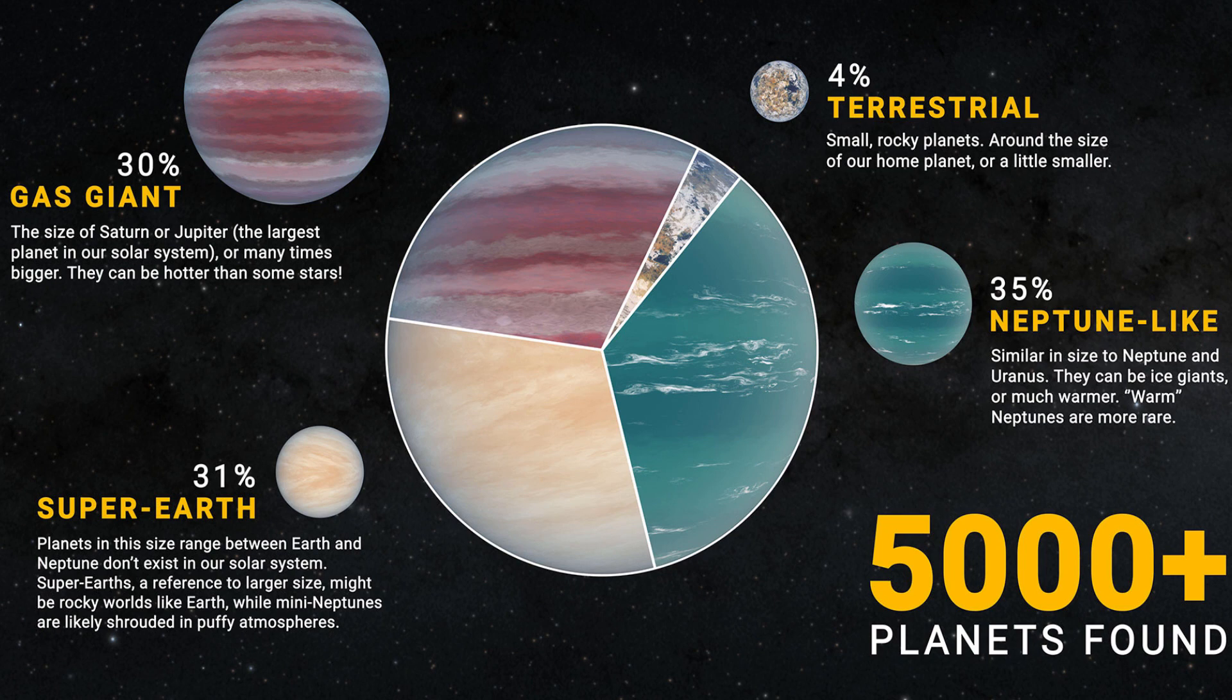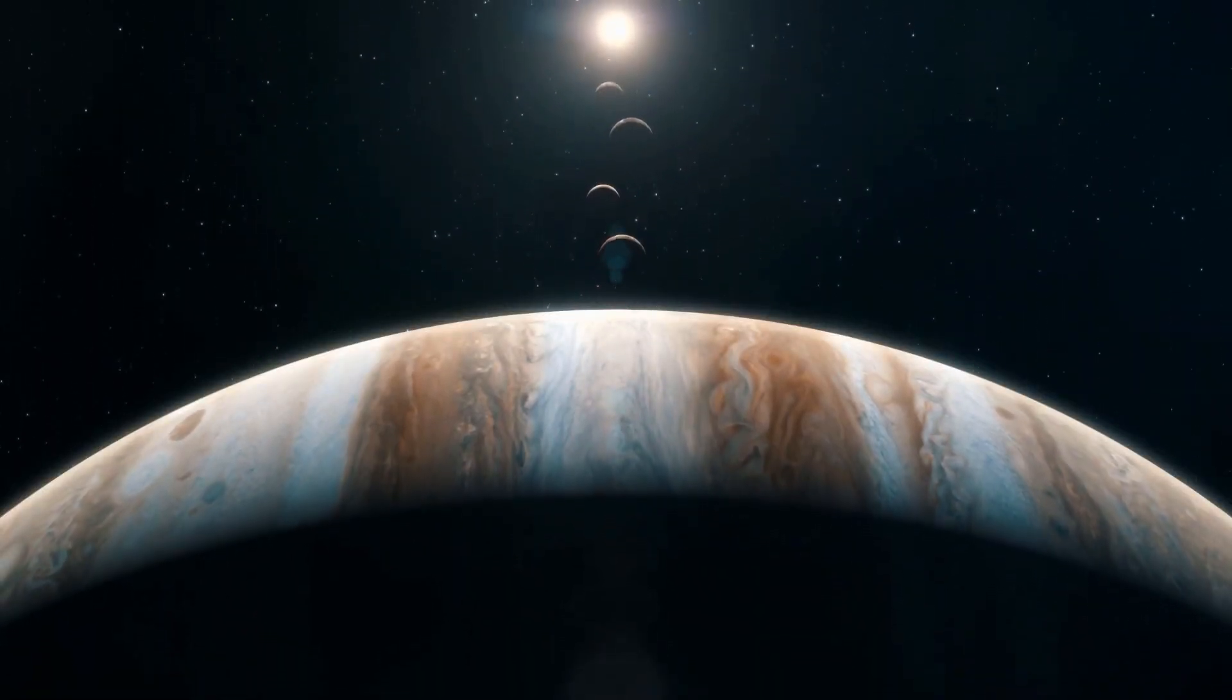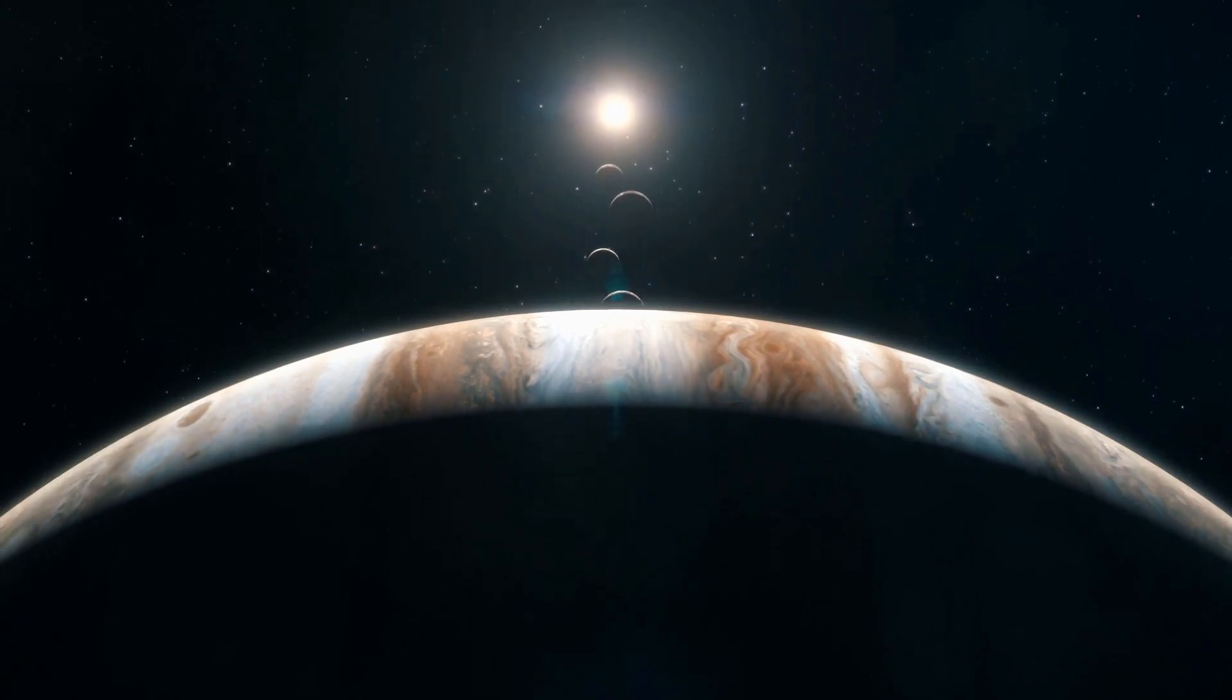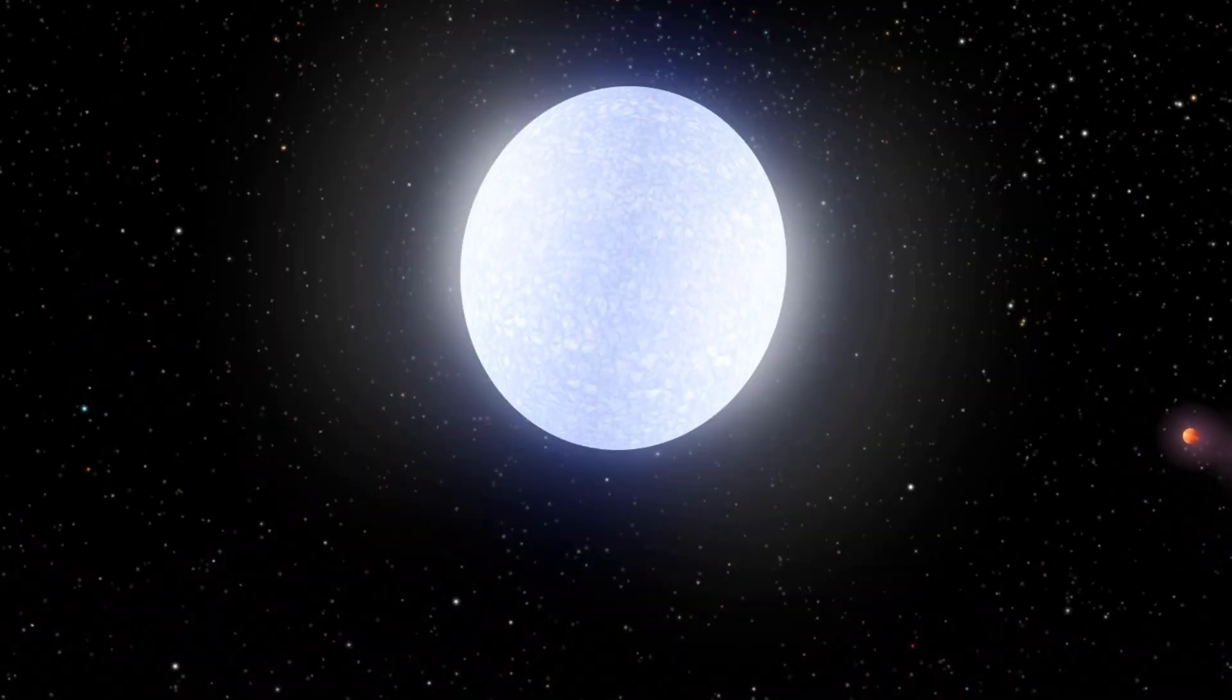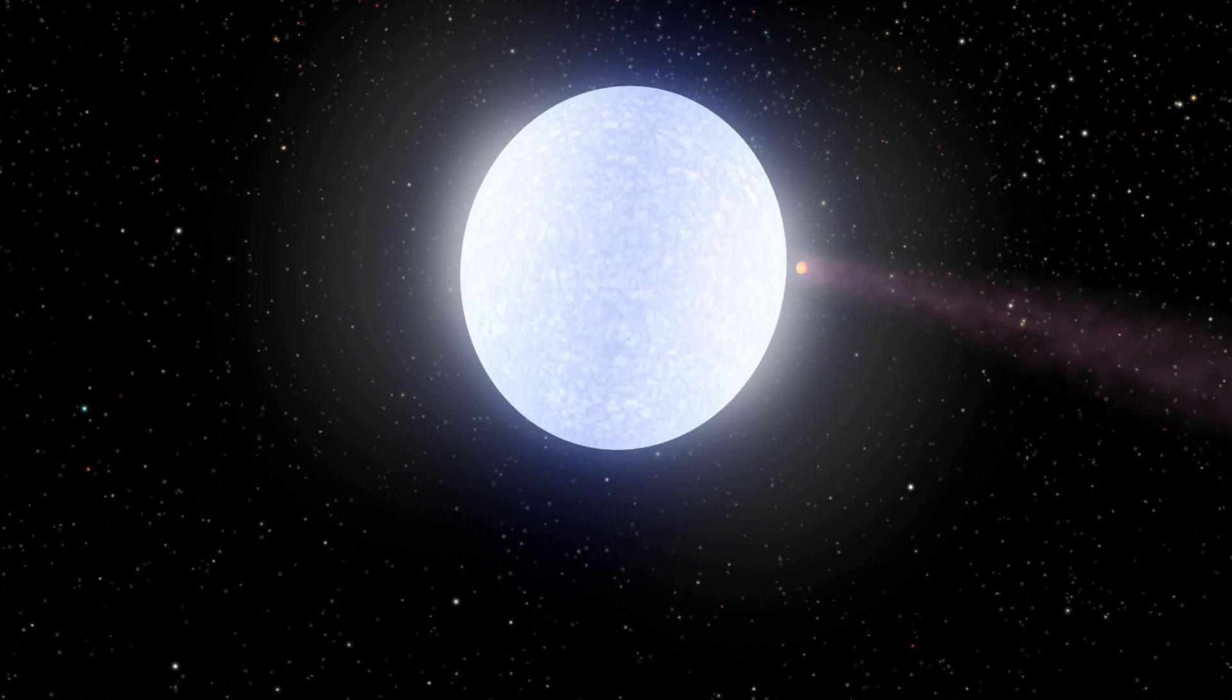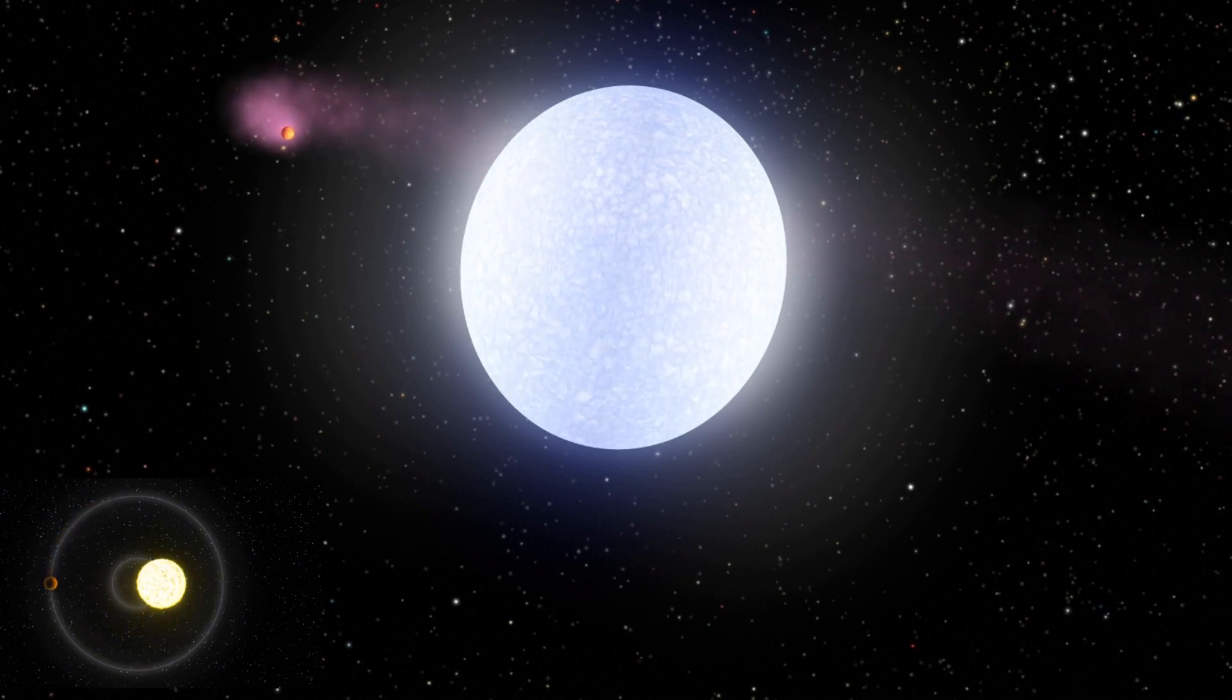When it comes to exoplanet types and composition, there's a variety of planets. 30% are gas giants, like Jupiter and Saturn. These planets contain hydrogen and helium gases above a solid core. There's a wide range of gas giant exoplanets. Some are much larger than Jupiter, and some orbit much closer to the star, creating what's known as a hot Jupiter. These hot Jupiters were easier to detect in the early days of exoplanet discovery because of their size and the pronounced wobble on the star.